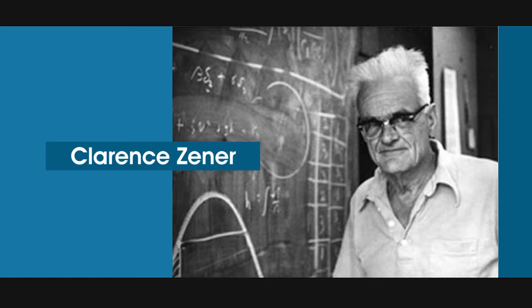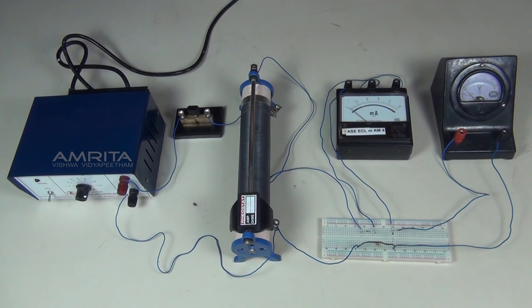The device was named after an American physicist, Clarence Zener. Our aim is to draw the reverse characteristic curve of a Zener diode and to find its reverse breakdown voltage.